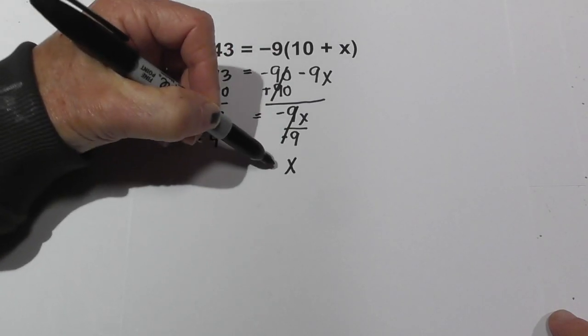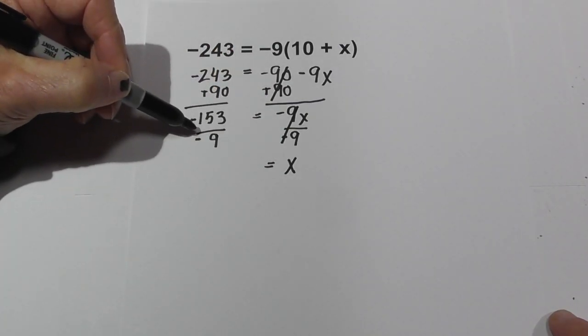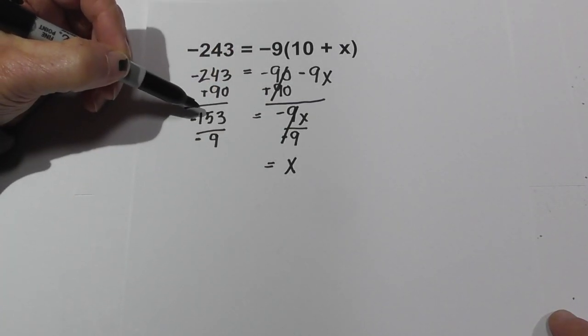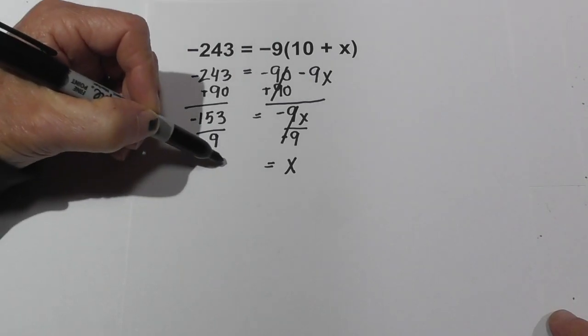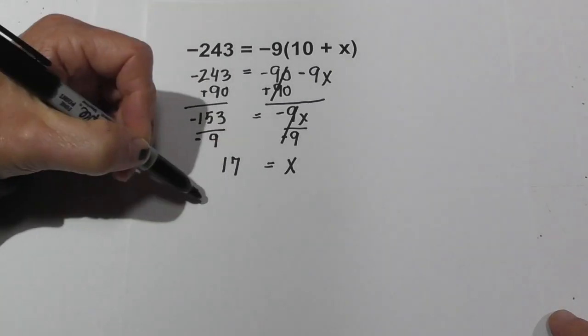So I'm going to divide 153 by a negative 9. These cancel. And remember whenever you have a negative and a negative it's going to be a positive. And 153 divided by 9 is 17. So x is equal to 17.